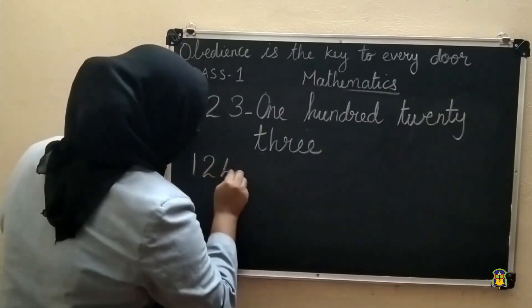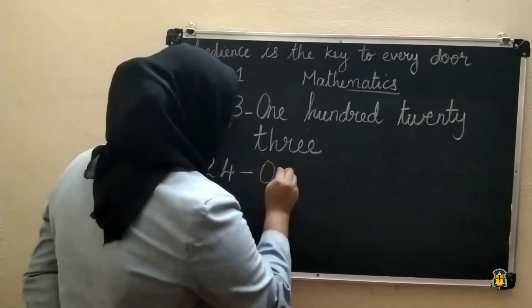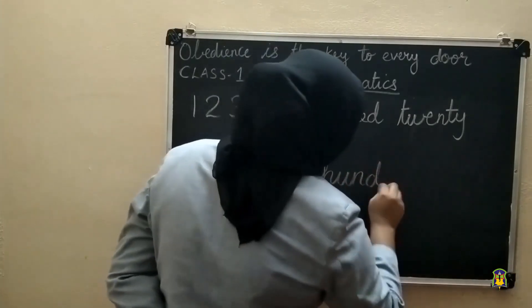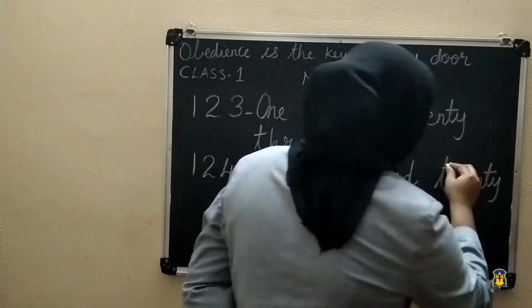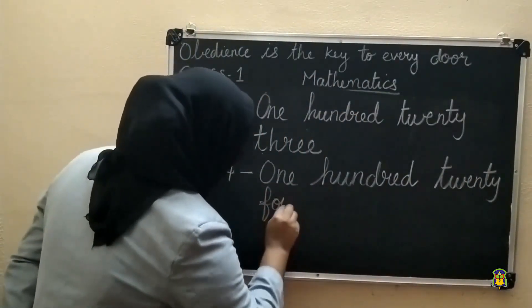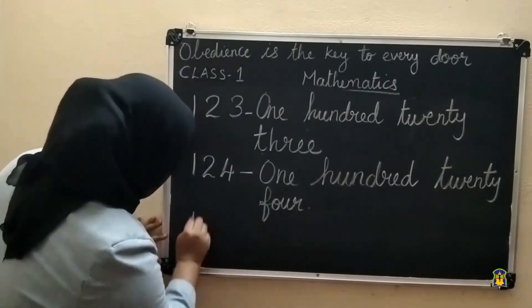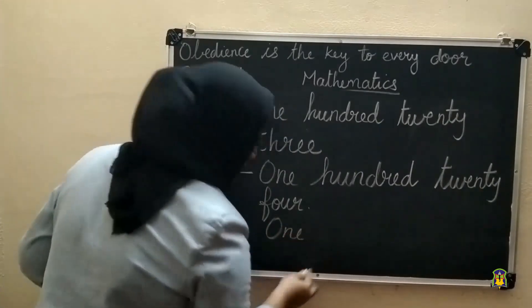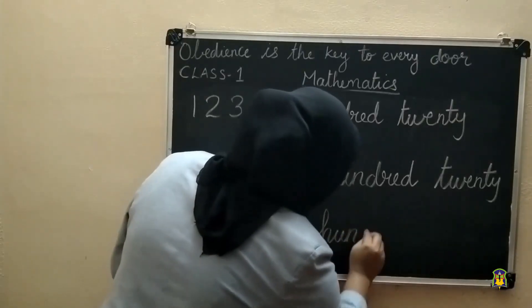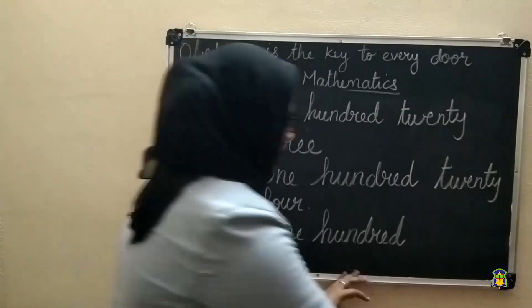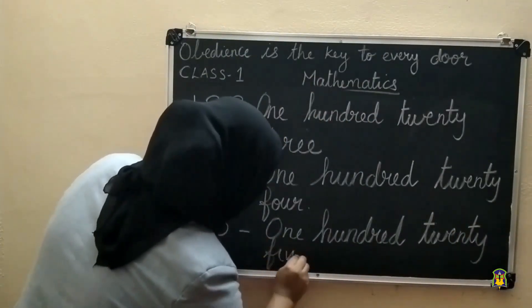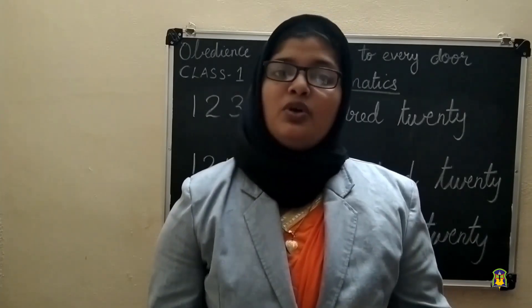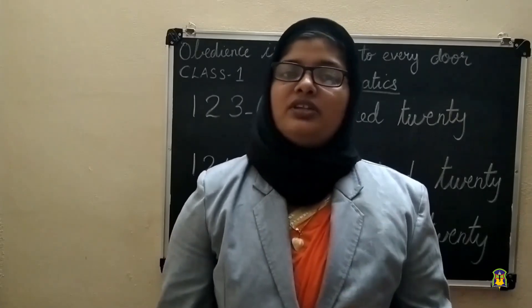Then one hundred and twenty-four: O-N-E H-U-N-D-R-E-D, T-W-E-N-T-Y, F-O-U-R, four. Next, one hundred and twenty-five: O-N-E H-U-N-D-R-E-D, T-W-E-N-T-Y, F-I-V-E, five. So today we completed numbers and number names up to 125. I hope you understood the topics. Thank you all.